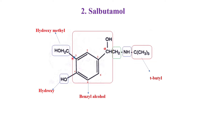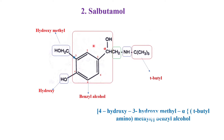So what is the structure of salbutamol? It has the parent nucleus as benzyl alcohol; at the alpha carbon it is connected with the tertiary butyl amino methyl group, at the fourth position it has a hydroxy group, and at the third position it has a hydroxy methyl. That is why its chemical name is 4-hydroxy, 3-hydroxymethyl, alpha-(tertiary butyl amino methyl) benzyl alcohol.